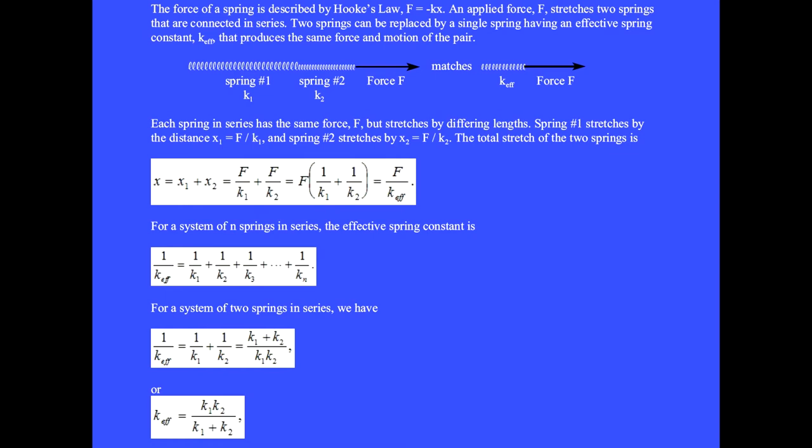Or we factor out the f times 1 over k1 plus 1 over k2. We define this to be f over an effective spring constant.